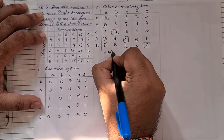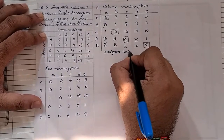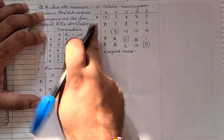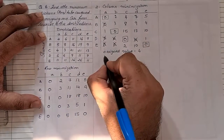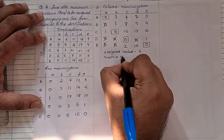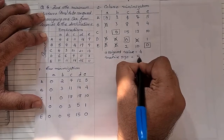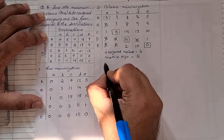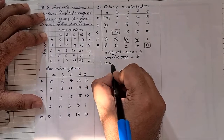After checking assigned values, we find there are only four assigned values, whereas the matrix size is five by five. Since the number of assigned values does not match the matrix size, the solution is not optimal.